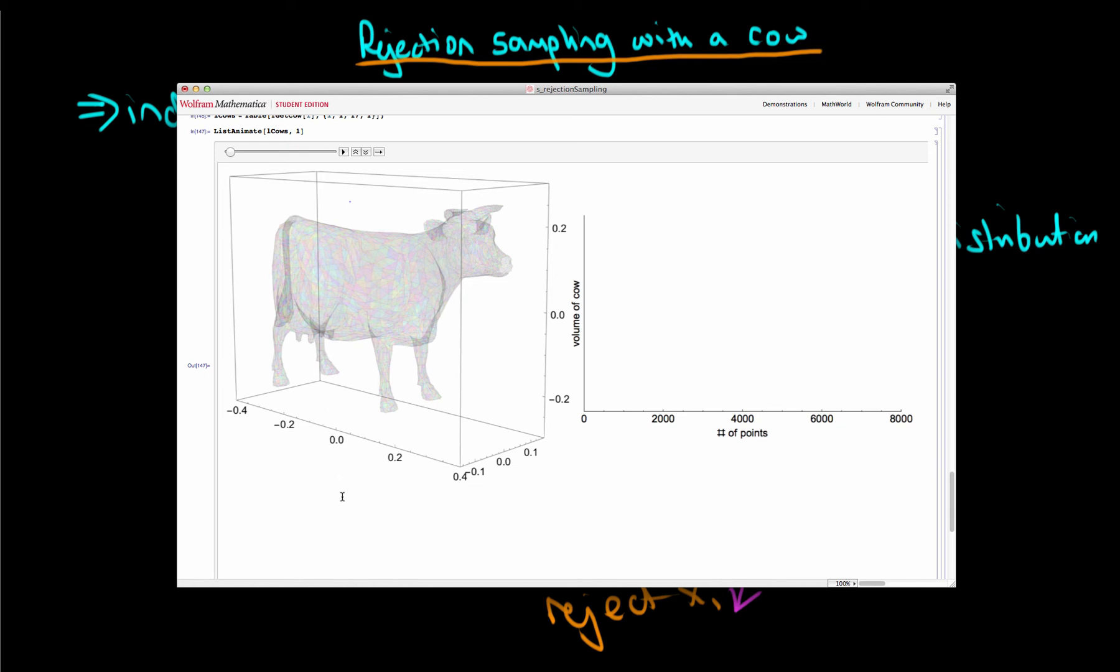So on the left hand side here I'm going to show you in blue the rejected points, in red the accepted points, and on the right I'm going to show you our estimate of the volume of the cow, in other words this quite difficult three-dimensional integral to do, as a function of the total number of points which we're generating.